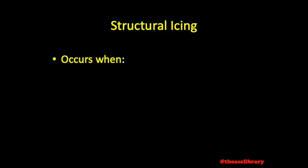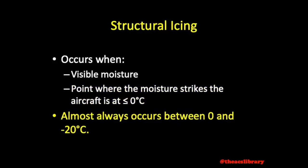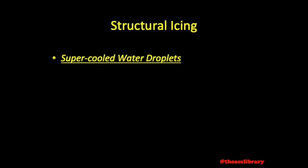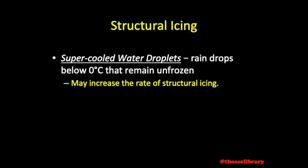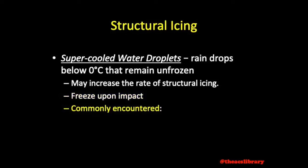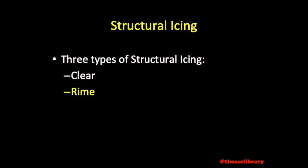Structural icing occurs when there is visible moisture present and the temperature at the point where the moisture strikes the aircraft is at 0 degrees Celsius or colder. Almost all structural icing occurs between an outside air temperature of 0 and negative 20 degrees Celsius. Supercooled water droplets or raindrops below 0 degrees Celsius that remain unfrozen may increase the rate of structural ice accumulation, freezing upon impact against the skin of the aircraft. Beware of supercooled water droplets in zones of temperature inversion where rain is falling into a freezing zone below, and moist air blowing upslope may result in supercooled water droplets as well. There are three types of structural icing: clear, rime, and mixed.